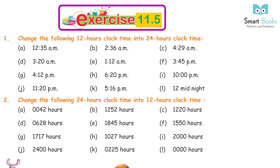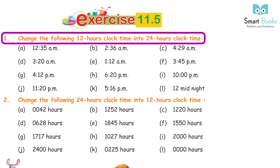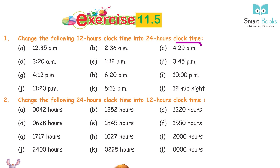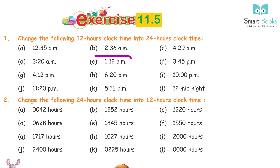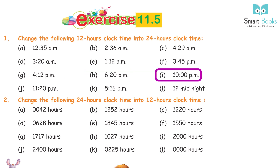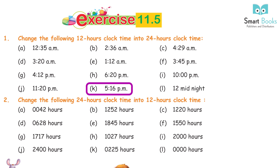Exercise 11.5, Question 1: Change the following 12-hour clock time into 24-hour clock time. A. 12:35 AM = 0035. B. 2:36 AM = 0236. C. 4:29 AM = 0429. D. 3:20 AM = 0320. E. 1:12 AM = 0112. F. 3:45 PM = 15:45. G. 4:12 PM = 16:12. H. 6:20 PM = 18:20. I. 10 PM = 2200. J. 11:20 PM = 23:20. K. 5:06 PM = 17:06. L. 12 midnight = 0000.